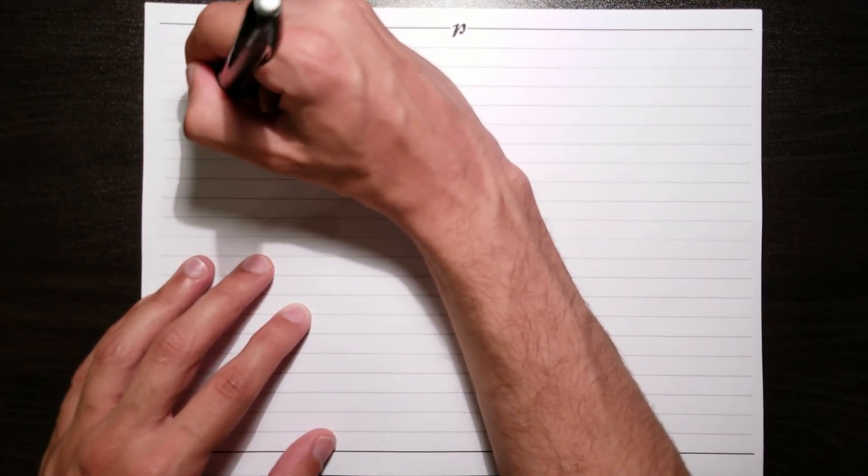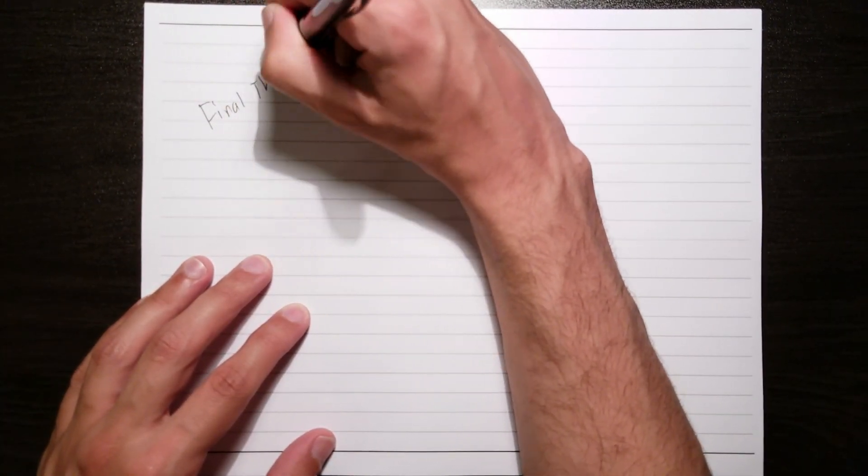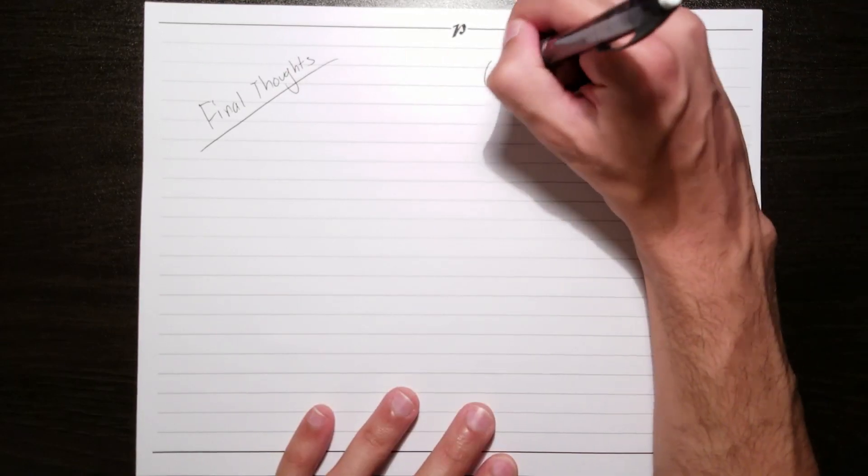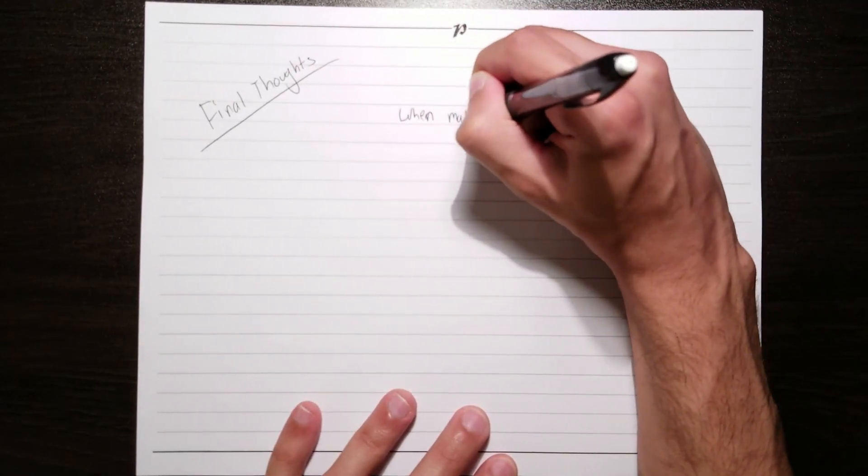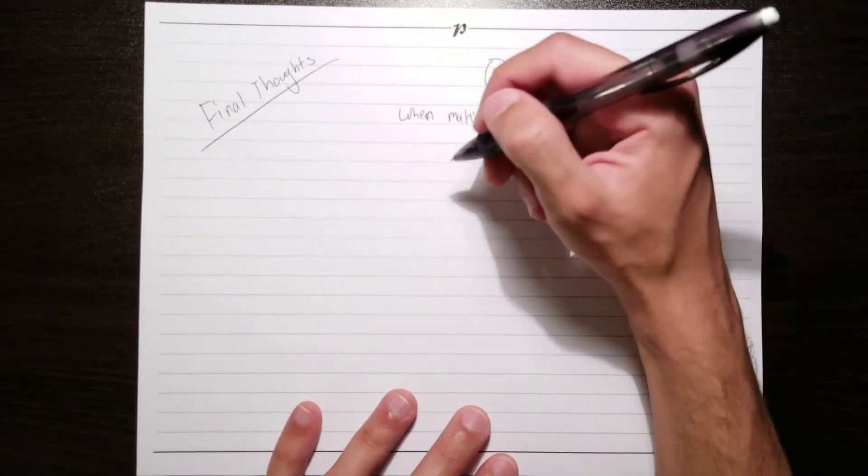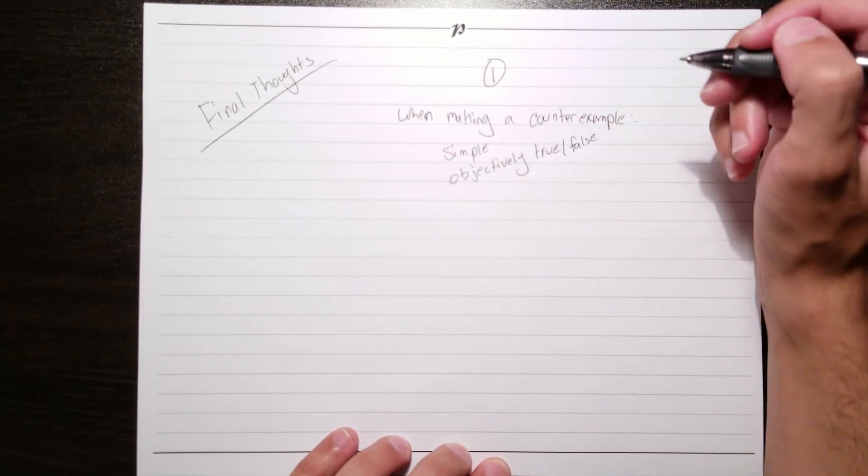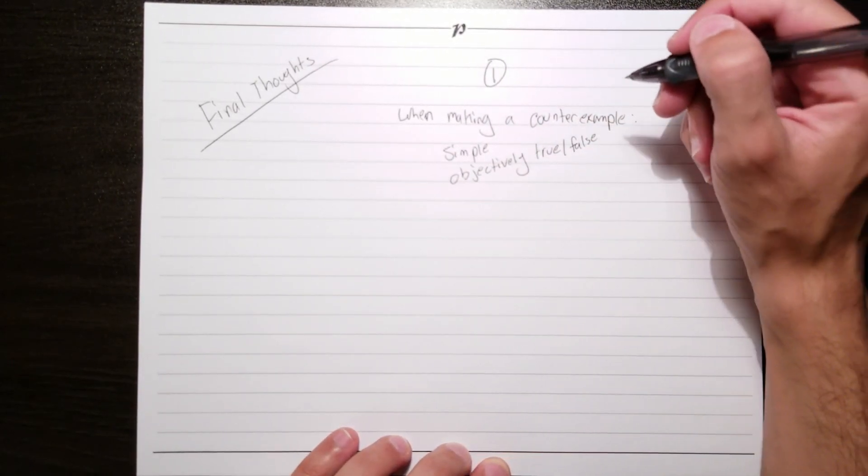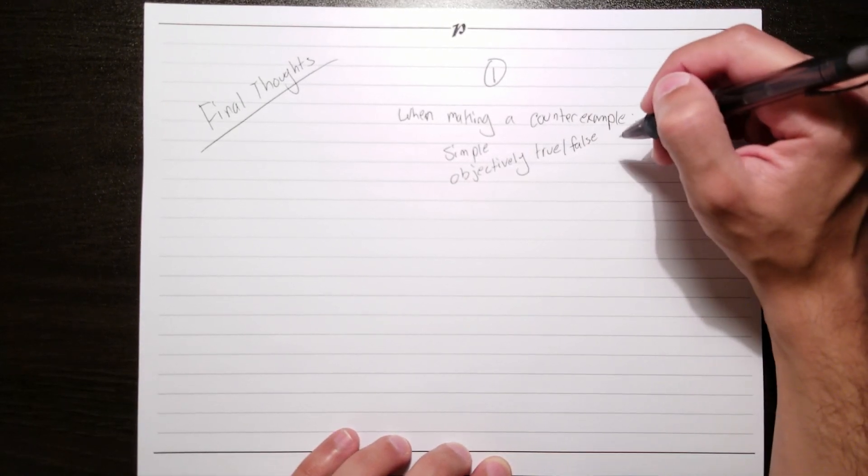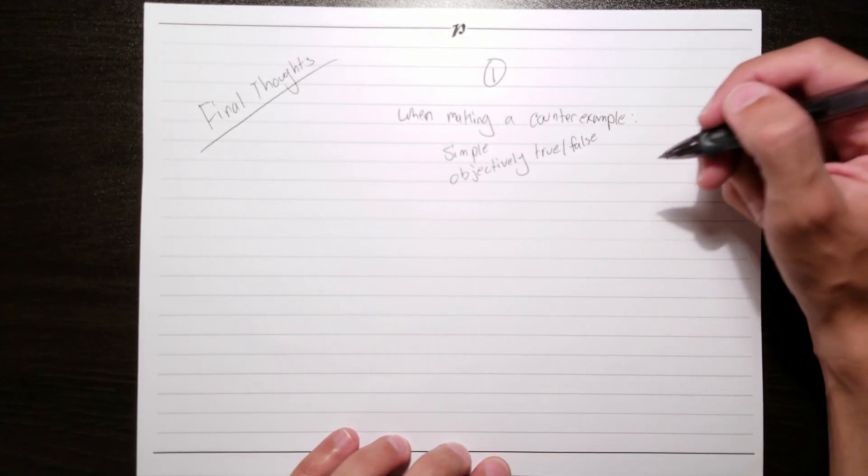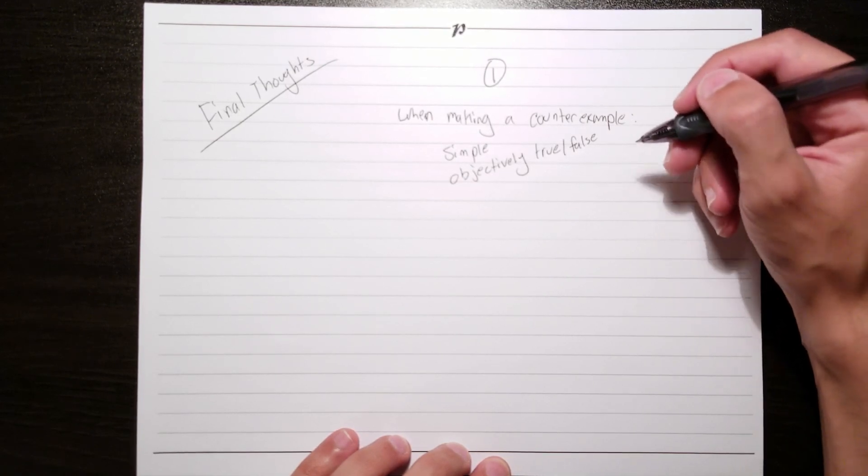And now for some final thoughts that I think are just as important as everything else that I've expressed in this video. The first is, when making a counterexample, stick to simple, objectively true or false statements. The idea is to make a simple argument that can show that the argument being evaluated is invalid. If you make your counterexample equally convoluted, then that kind of defeats the purpose.